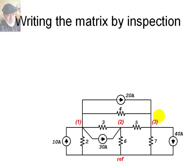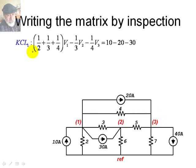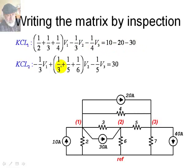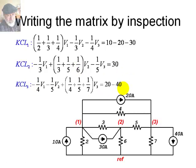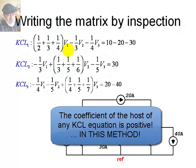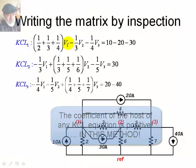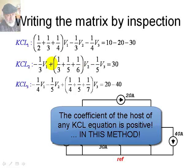I will just write them and then talk about them. For node 1, we have KCL1, a coefficient V1, a coefficient V2, a coefficient times V3, and then a number. And we have KCL2, and then KCL3. You can stop the tape and verify the accuracy of those coefficients. But here what I want to highlight is something. Observe that the coefficient of the host of the first equation, which is V1, is positive. The coefficient of the host of KCL2, which is V2, is also positive.